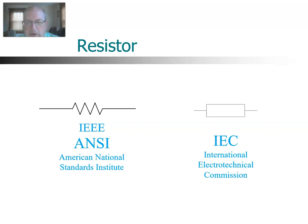There are only minor differences between the two sets of standards. A resistor is one component that has two different symbols. A capacitor has some variation in the symbols, and the digital logic gates have a significant variation. But most electronic components actually have the same symbol between the two sets of standards. Some manufacturers are starting to move toward the IEC standards within the United States, but the majority are still using ANSI.